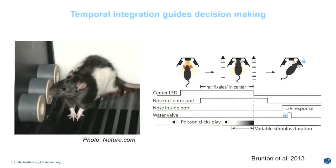We were interested in how mammals use integration in a decision-making process. We train rats in an operant training chamber to poke their nose into a center poke, at which point they receive a series of auditory clicks — randomly numbered and randomly timed — presented to the left and right ears. The animal is trained to count the number of clicks on each side and orient to the side that had the greater number of clicks.